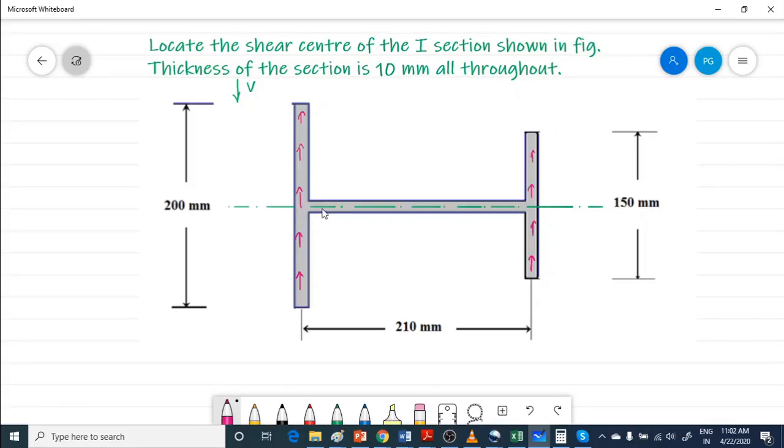Now let us say the total shear resisted by the left leg, let us say this one is V1. Shear resisted by right vertical leg is V2.